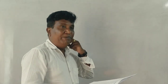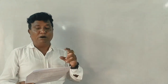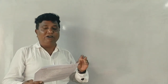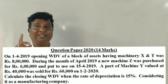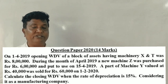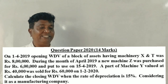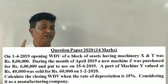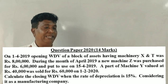Business Taxation late 2020 question paper — late assessment of companies, six marks on depreciation. Second question: on first of April 2019, opening written down value of block of assets having machines X and Y was eight lakh rupees. During April 2019, a new machine Z was purchased for six lakhs, put to use on 15th April 2019. A part of machine Y valued at rupees 40,000 was sold for 60,000 on 1st February 2020. Calculate closing written down value when rate of depreciation is 15 percent.